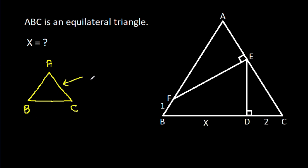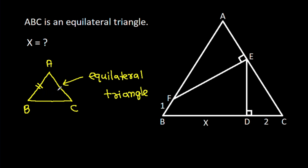In an equilateral triangle ABC, AB equals AC equals BC, and all angles are 60 degrees. So here, all these angles will be 60 degrees.